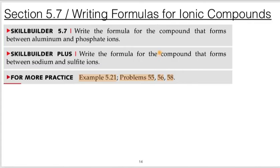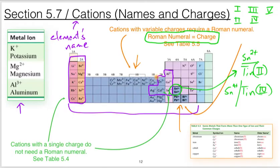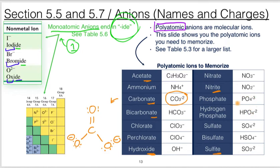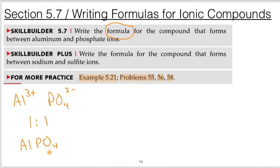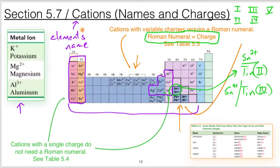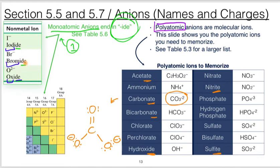Let's work a practice problem: the formula between aluminum and phosphate. From our knowledge of the periodic table, aluminum takes on a plus three. From memory, we know phosphate takes on a minus three, giving us the formula AlPO₄. The charges are equal and opposite, so they come together in a one-to-one ratio. To name it: the cation just uses the element's name — aluminum — and phosphate is the anion name. So this is simply aluminum phosphate.